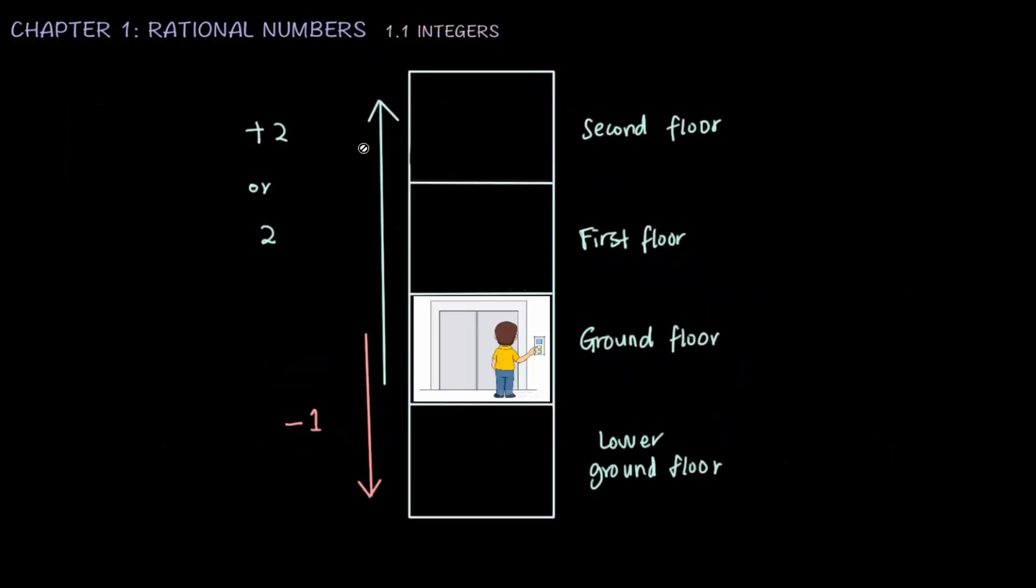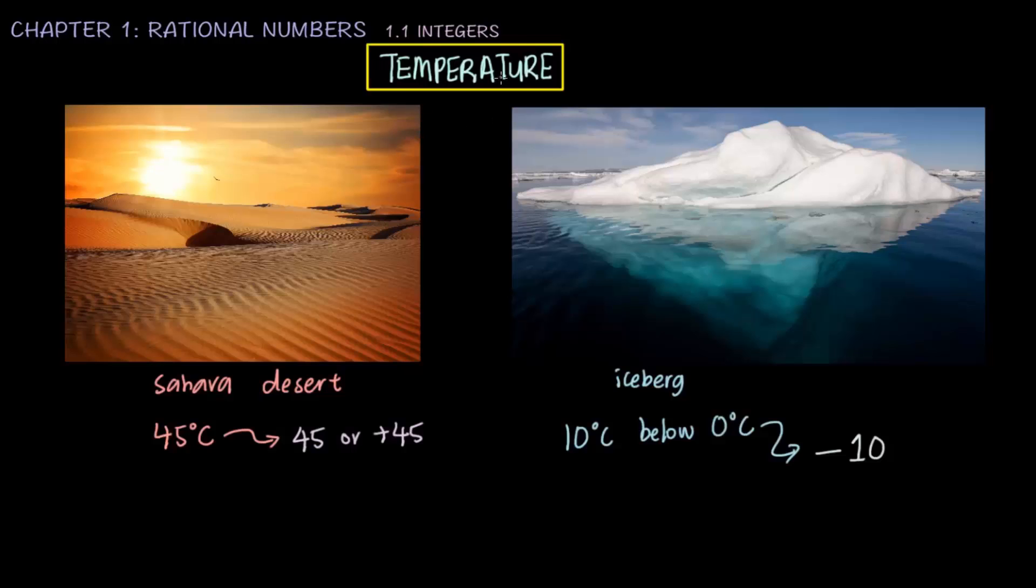Just like I said, when we move up, we will write it as positive. But when we move down, we will write it as negative. It is the same as temperature. When the temperature rises up, it is going to be hot, which is why the Sahara is 45 degrees Celsius or plus 45. But when the temperature goes down, it becomes cold. But sometimes, it becomes too cold when it goes below 0 degrees Celsius. That's when we write it as negative 10.